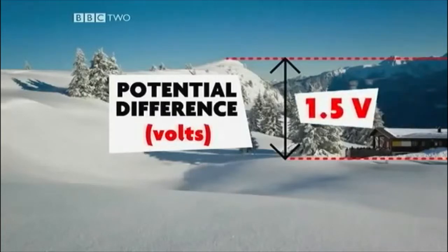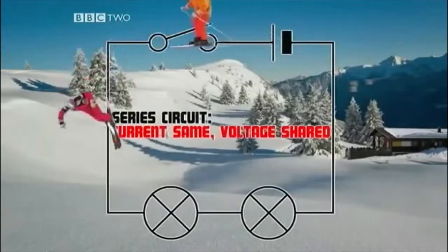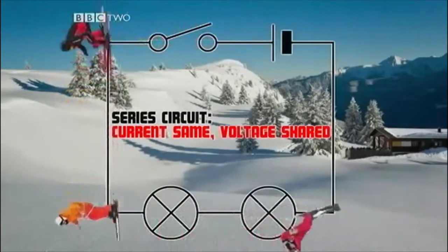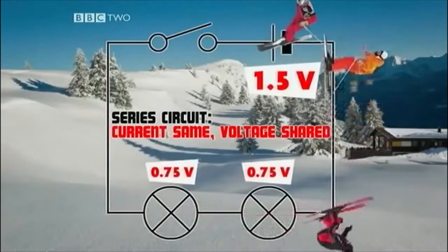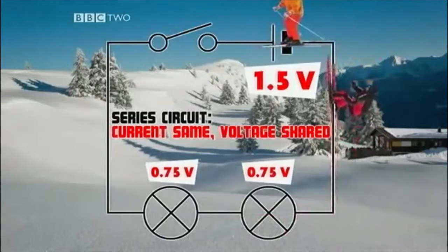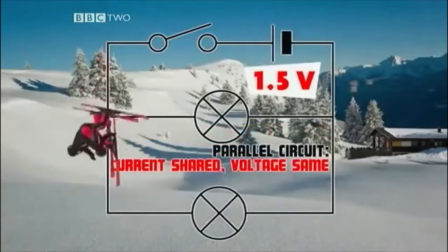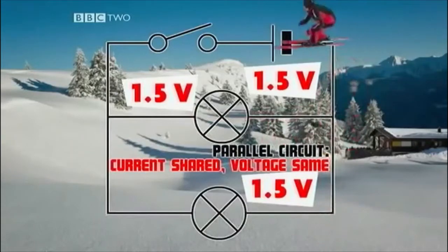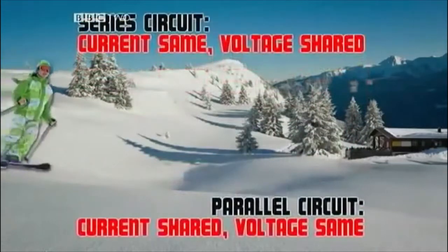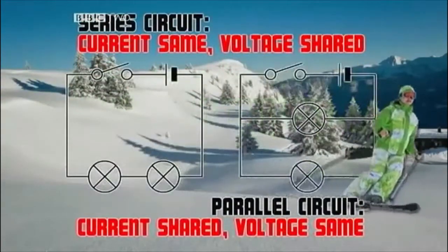For the standard cell, this is 1.5 volts. In a series circuit, the potential difference is shared, so these two identical lamps share the 1.5 volts from the cell — half each. But in a parallel circuit, both bulbs have the full potential difference across them. So opposite things happen in series and parallel circuits.